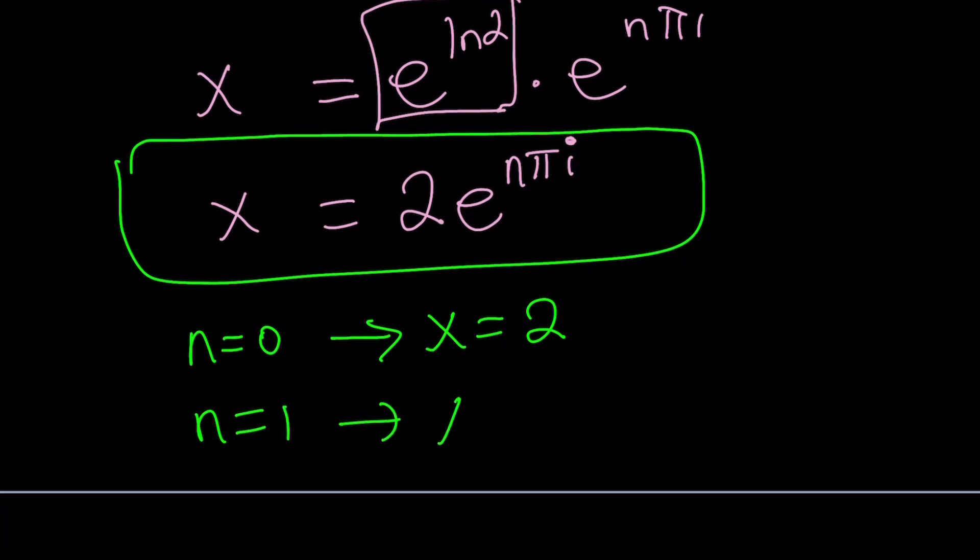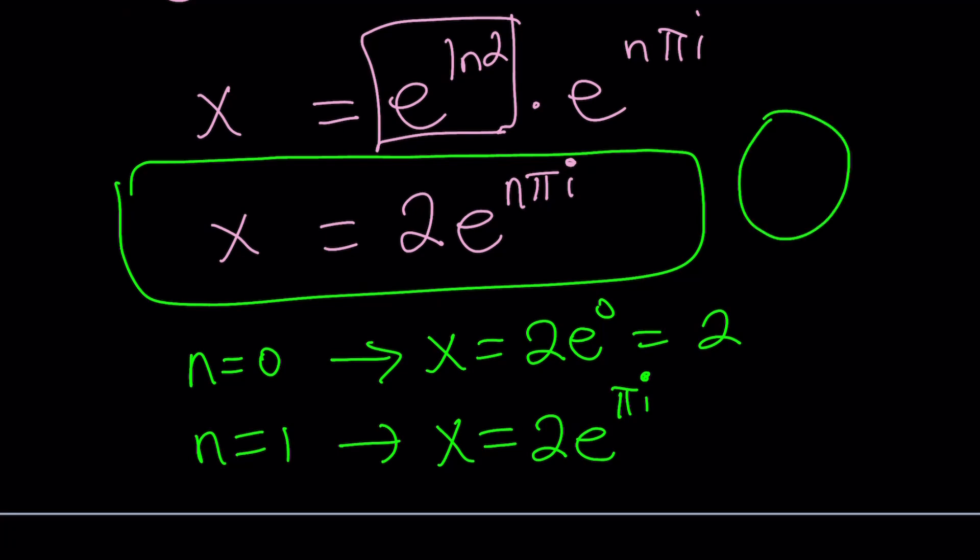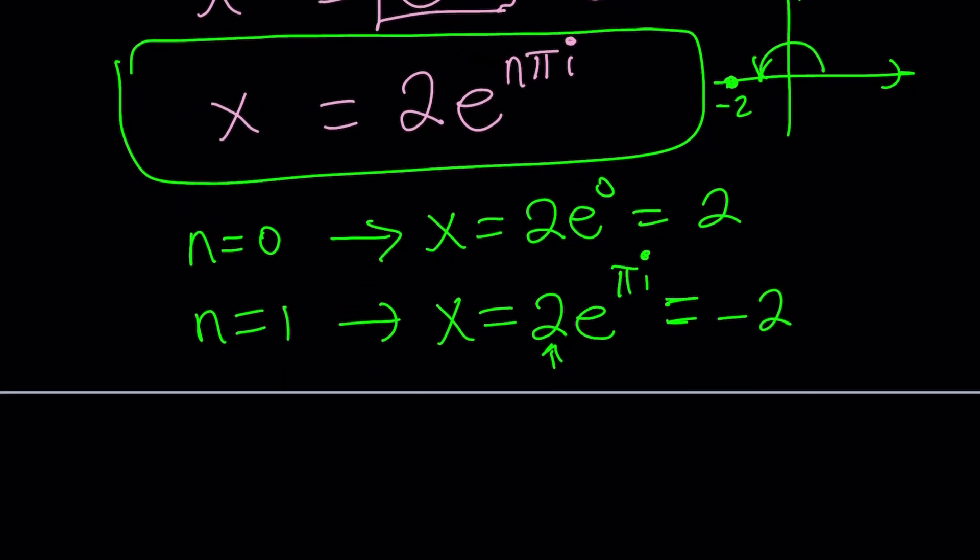If n is equal to 1, you're going to get x equals 2 times e to the power pi i. But if you think about this, e to the power pi i is basically our number that has r equals 2 and the angle is pi. When the angle is pi, you're basically talking about this number here, and that is actually the real number, negative 2. So this is equivalent to negative 2. So there are two solutions, 2 and negative 2. If n equals 2, you'll get another one, so on and so forth. It's just going to cycle back and forth.